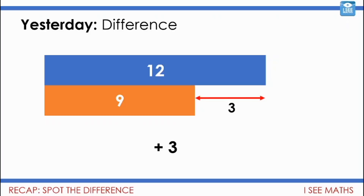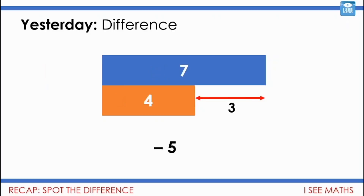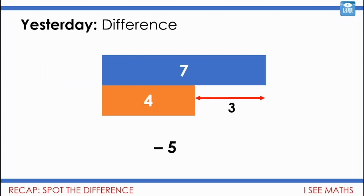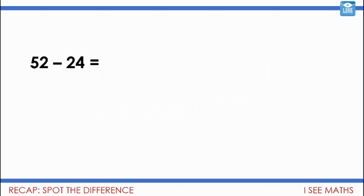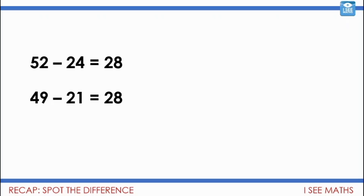Or if we subtract the same number from both — if we have 12 and 9 and take 5 from both, the difference of course stays the same. This technique is really useful. Take 52 subtract 24: I don't know that easily, so I change 52 to 49 and 24 to 21, taking away 3 from both. The answer is the same. 49 take away 21: 4 tens take 2 tens is 2 tens, 9 take 1 is 8. So 52 subtract 24 is 28.